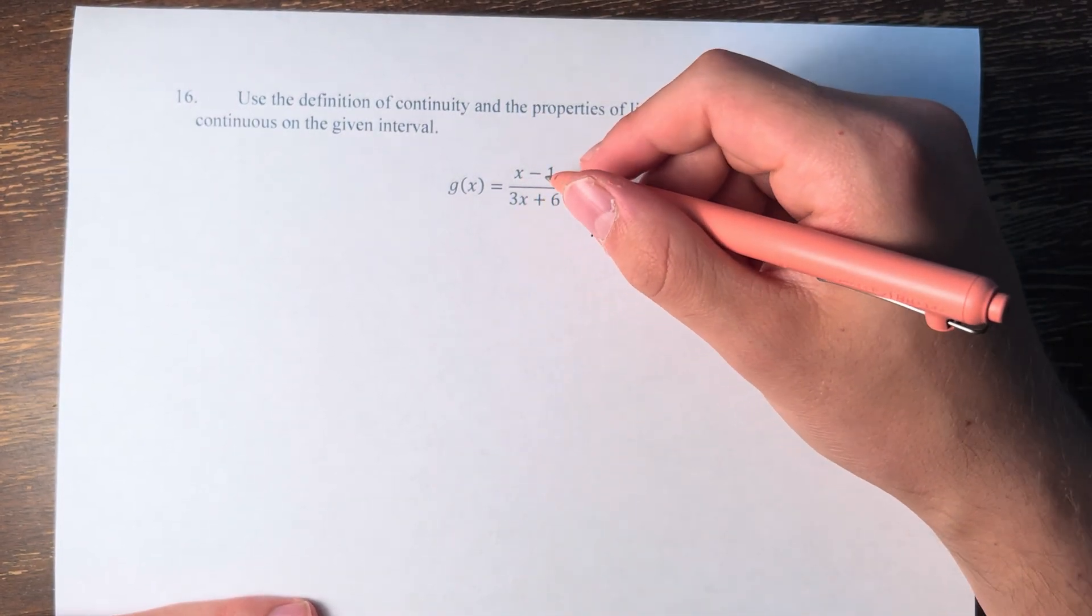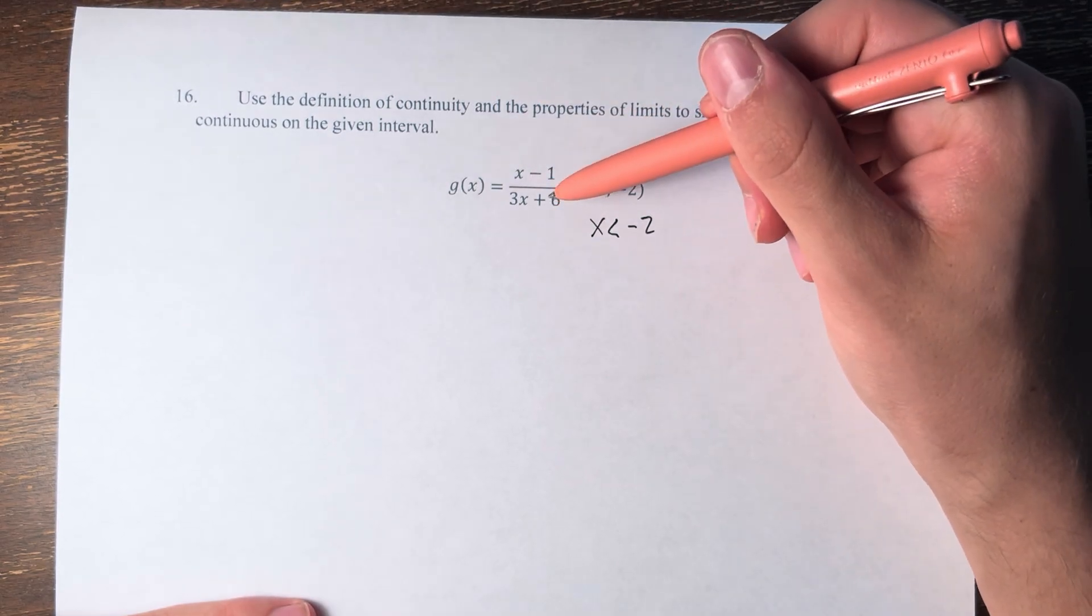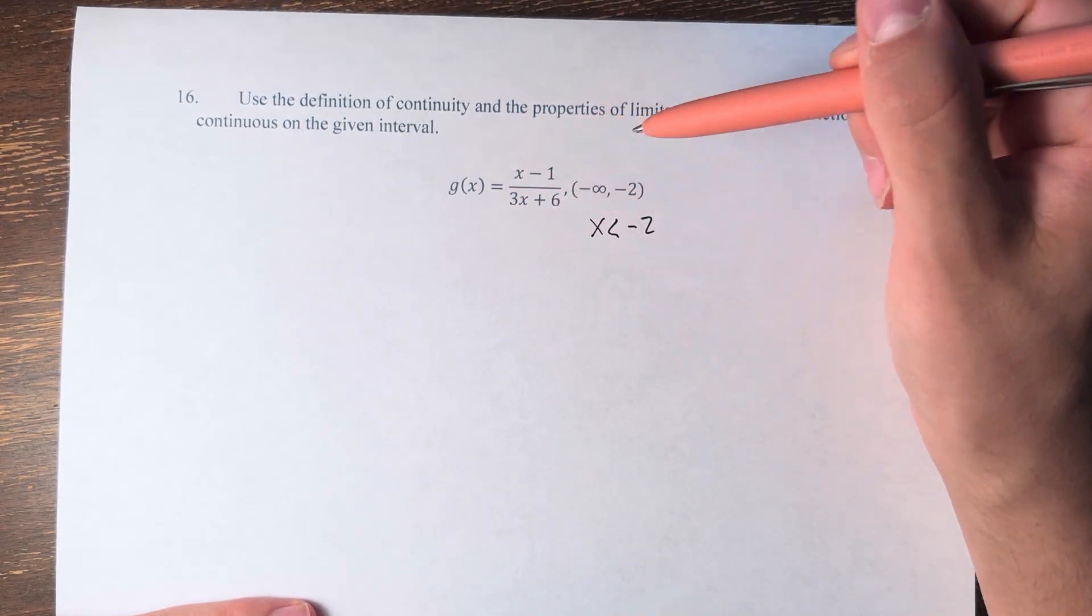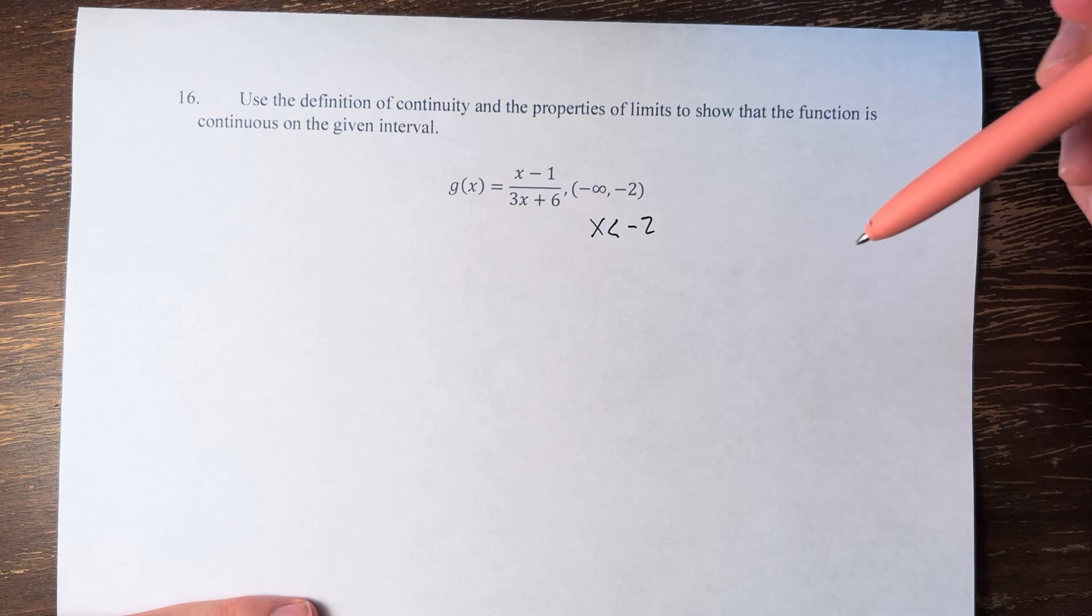So g of x is a rational function, right? We have a polynomial on top, a polynomial on the bottom, we have this fraction, and therefore this makes it a rational function.